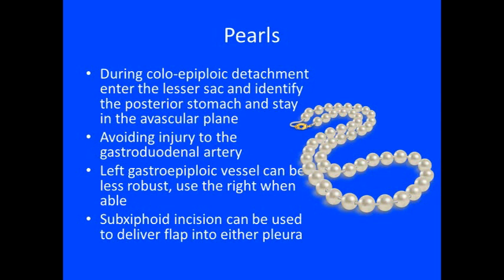Some pearls to follow during dissection: during the coloepiploic detachment, be sure to enter the lesser sac and identify the posterior stomach, staying in an avascular plane. When dissecting towards the hepatic flexure, be sure not to injure the gastroduodenal artery. The left gastroepiploic vessel can be used but is usually less robust. Using the right gastroepiploic, you can reach either pleura as well as the mediastinum. A sub-xiphoid incision can be used to deliver the flap into either pleura when a sternectomy has not been performed.